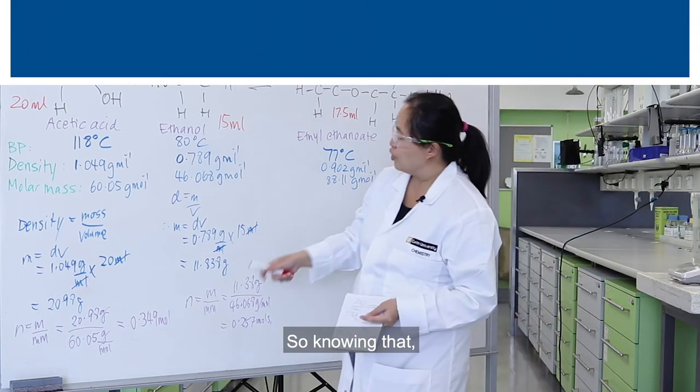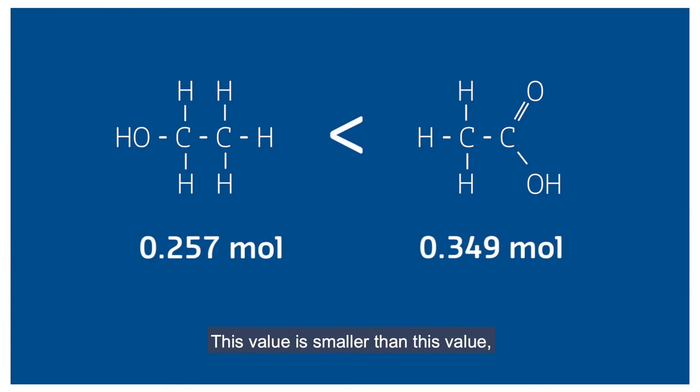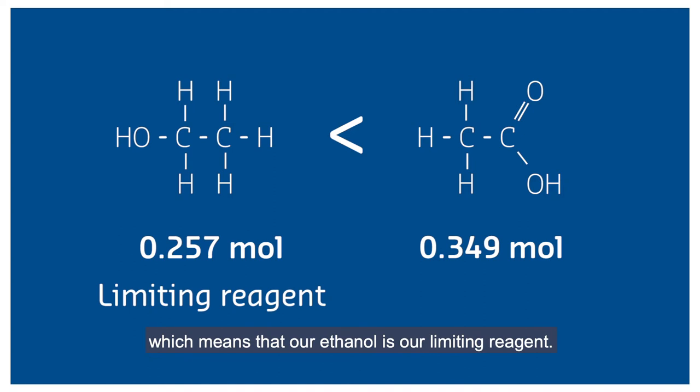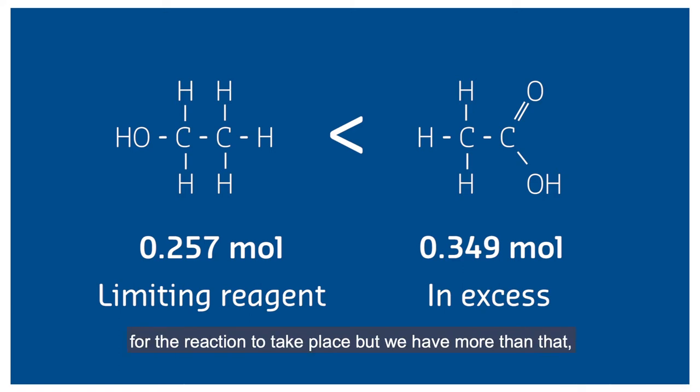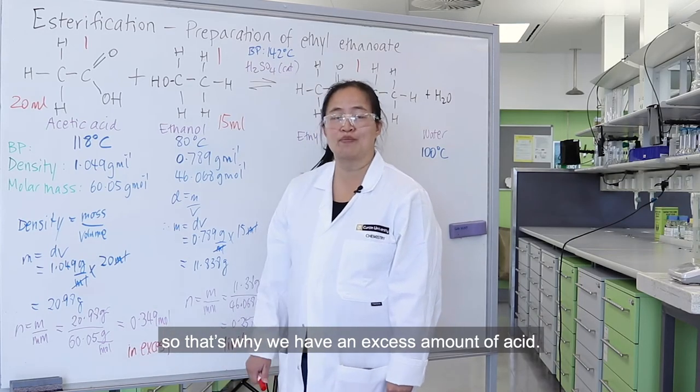Knowing that, we can just compare these numbers. This value is smaller than this value, which means that our ethanol is our limiting reagent. We only need 0.257 moles of acetic acid for the reaction to take place, but we have more than that, so we have an excess amount of acid.